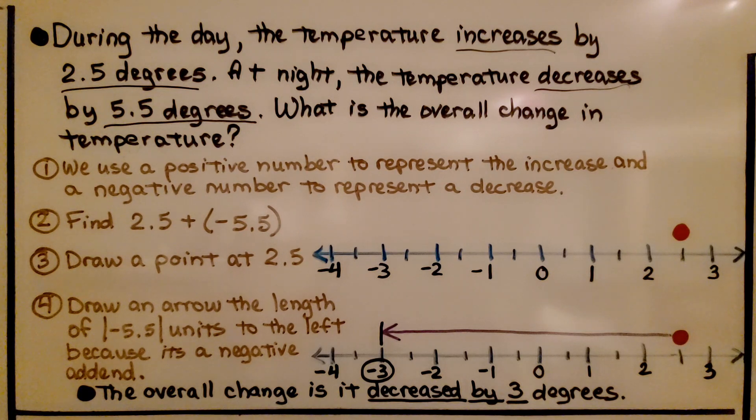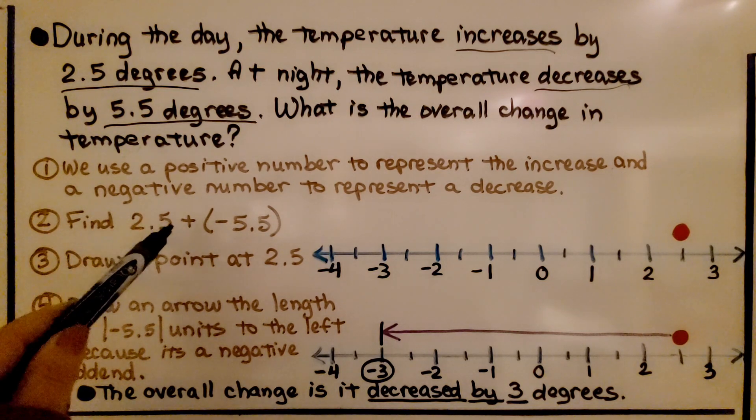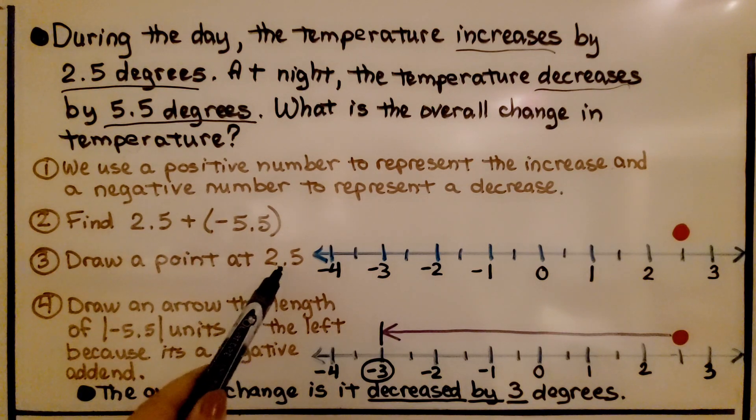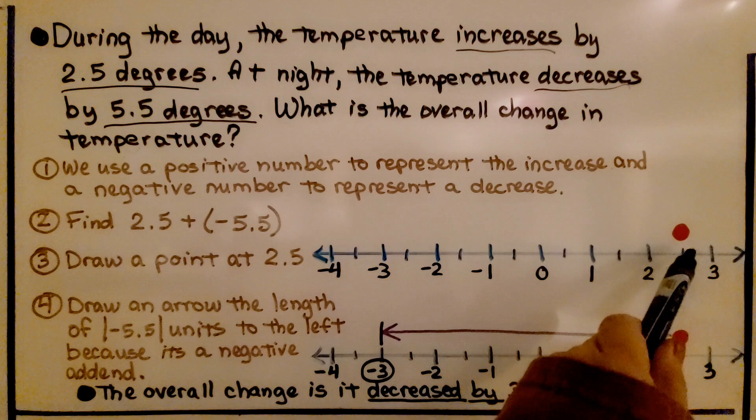First thing we do is use a positive number to represent the increase and a negative number to represent a decrease. We need to find 2.5 plus negative 5.5. We draw a point at 2.5, right here.